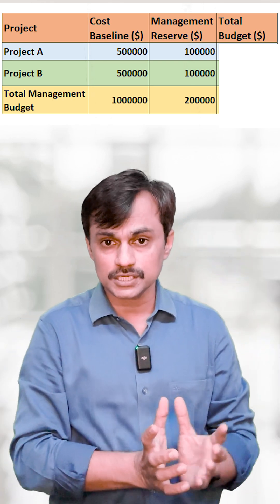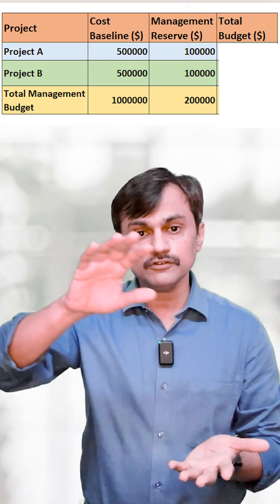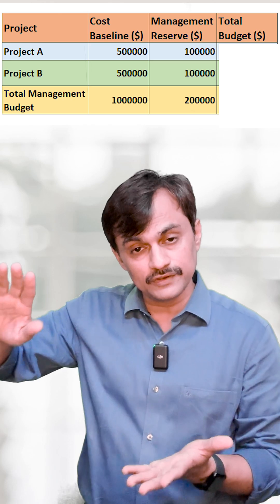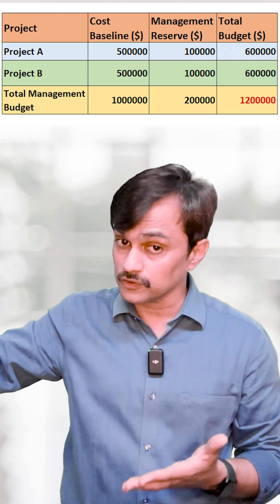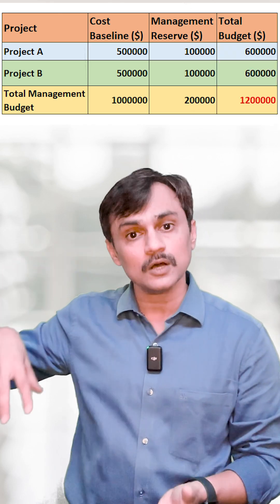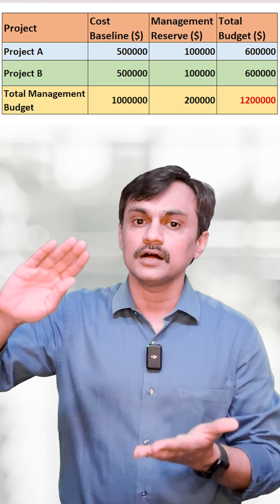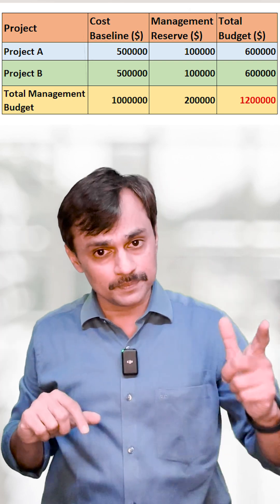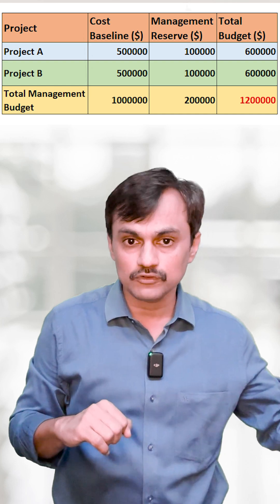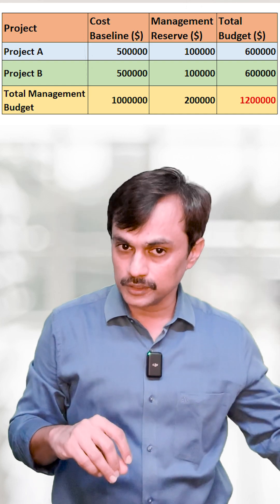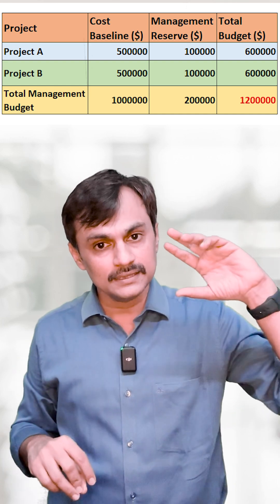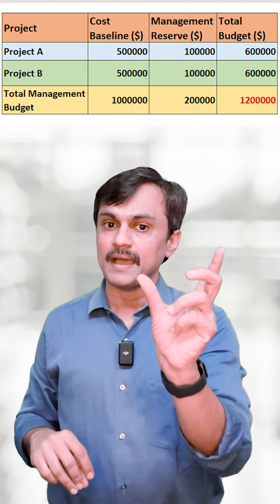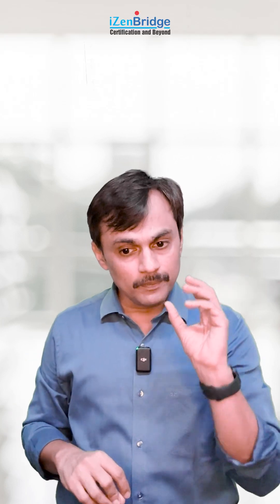When I'm doing portfolio-level budgeting, when I'm looking at an organization-level budget allocation, from an organization perspective for a project we have allocated $600,000, not $500,000 — because $500,000 is the cost baseline and $100,000 I have kept as management reserve. When we use the word 'project budget,' it is from the perspective of the portfolio and the perspective of sponsors, and that project budget includes management reserve.